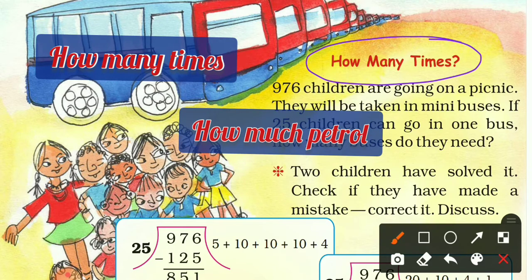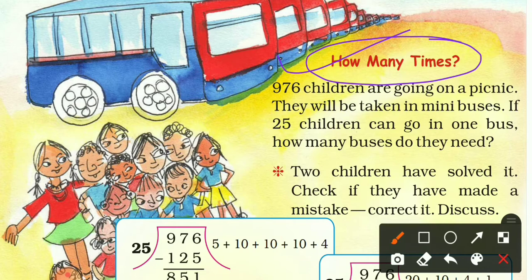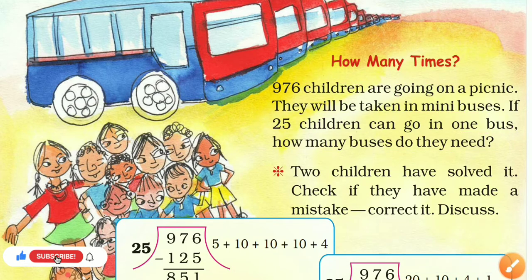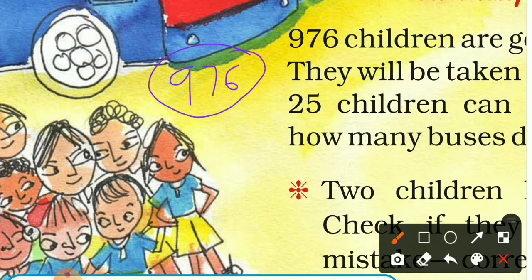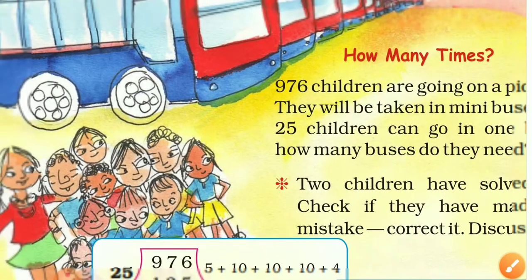Now let's come to the first topic: 'How Many Times.' The story is: 976 children are going on a picnic. They will be taken in mini buses. If 25 children can go in one bus, how many buses do we need? The total number of children is 976, and in one mini bus only 25 children can sit. We need mini buses for all 976 children.